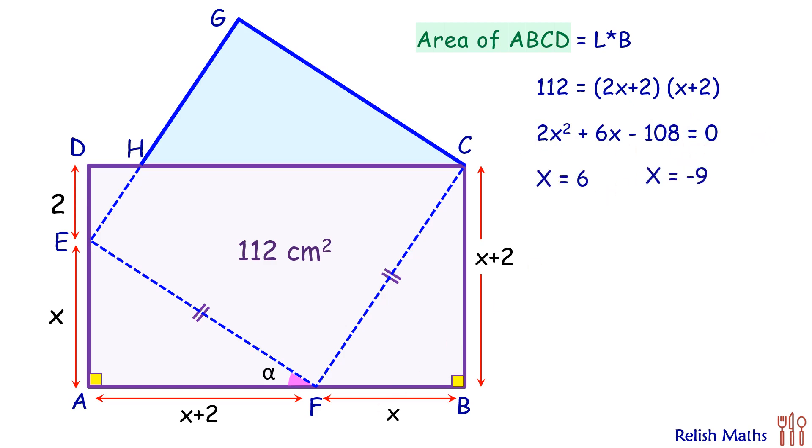When we solve this quadratic we'll get two values of x: x as 6 or x as negative 9. So x can't be negative, thus x is 6 centimeter. If we look at the triangle EAF,